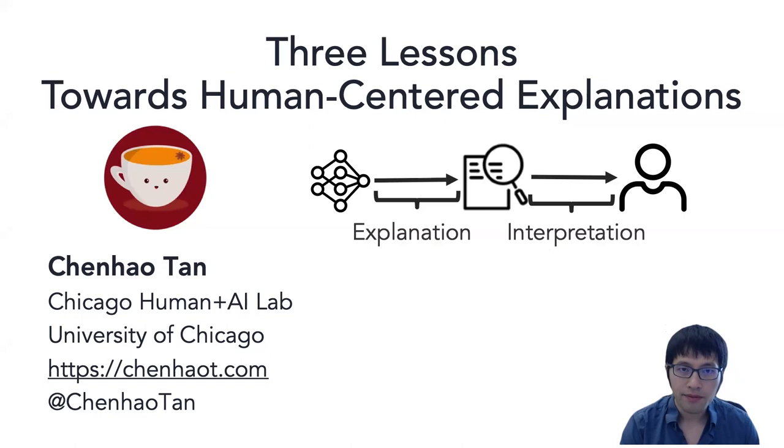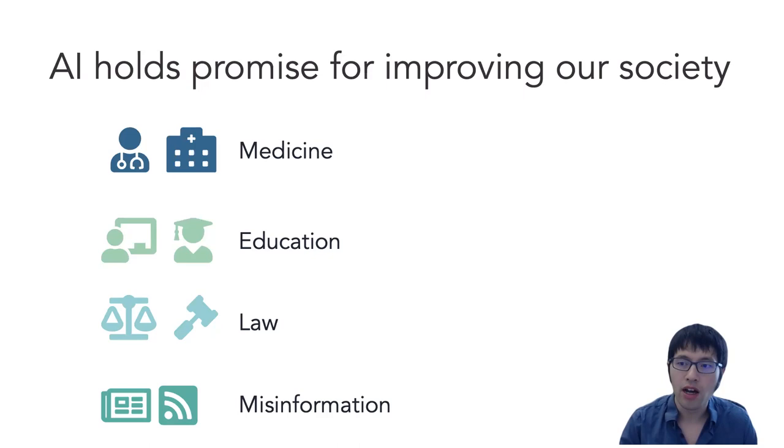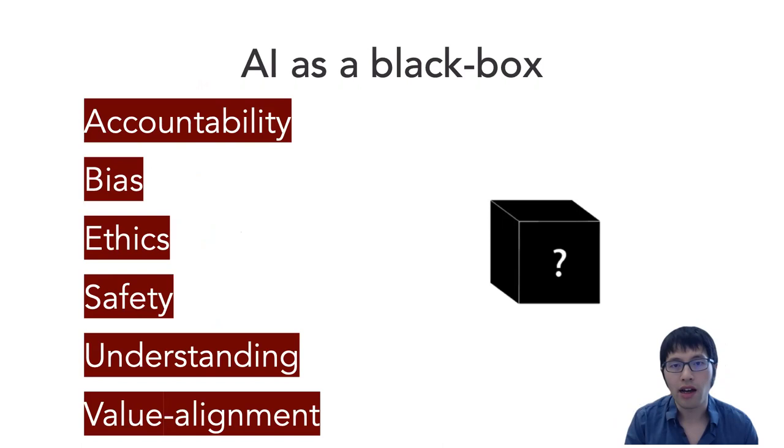So all of us are very excited about the potential of AI. AI can potentially improve human decision-making in a wide range of critical settings, such as medicine, education, criminal justice, and information consumption. However, there are also growing concerns if we simply view AI as a black box. It has issues such as accountability, bias, and more recently, the notion of value alignment is also very important.